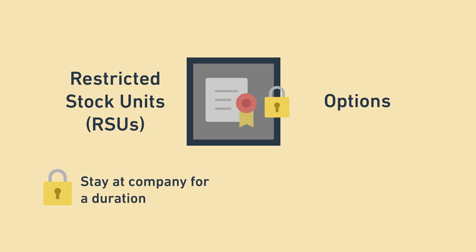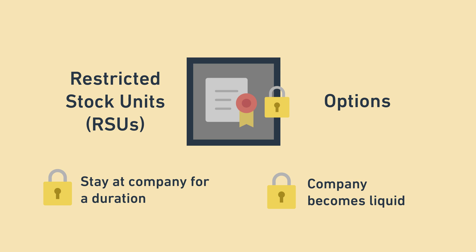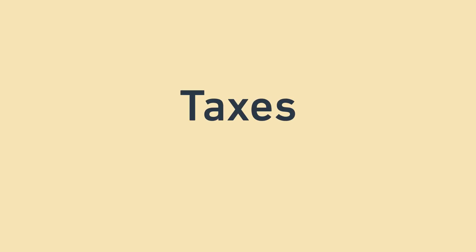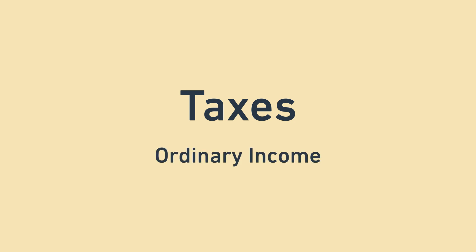You can't reach in and unlock the shares until certain conditions happen, known as vesting. One common condition is staying at the company for a certain amount of time, called time vesting. Another common one is the company becoming publicly tradable. RSUs and options both have specific tax implications that I'll cover in parts 2 and 3 of my video series. But before we get to the specifics, I want to talk about taxes at a high level. Equity-based compensation is generally recorded under two categories for tax purposes: ordinary income and capital gains.